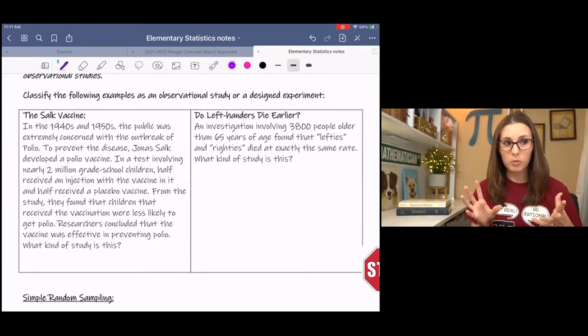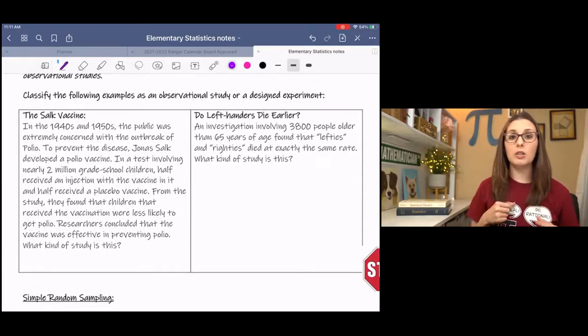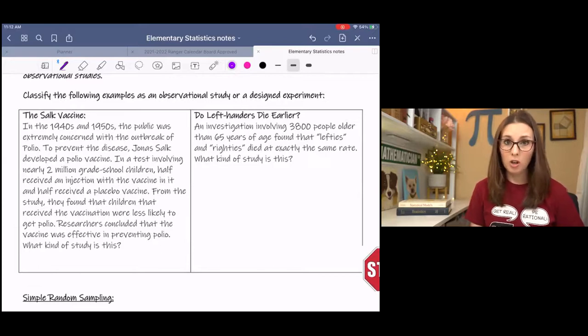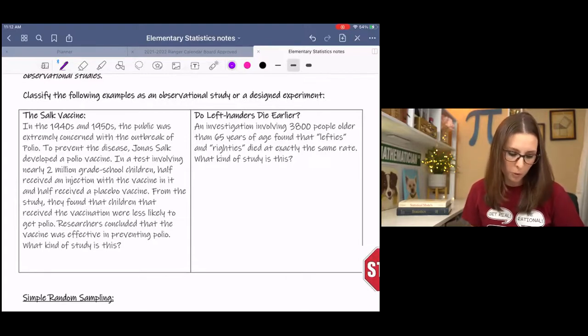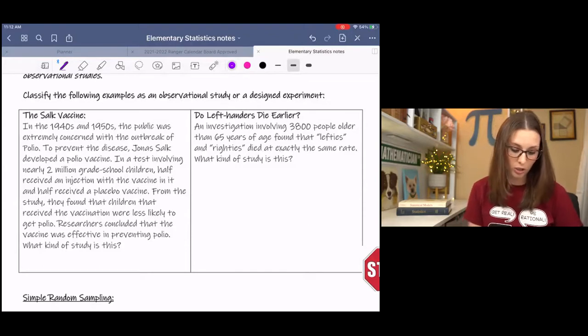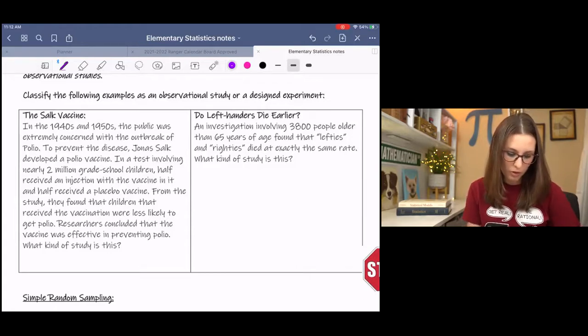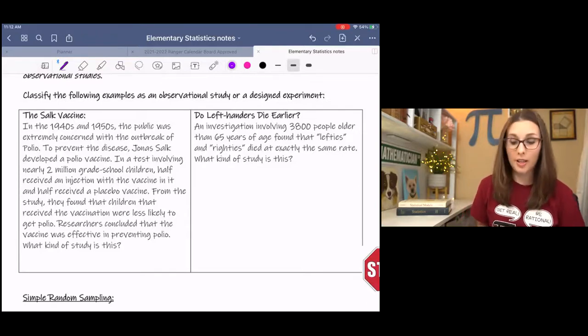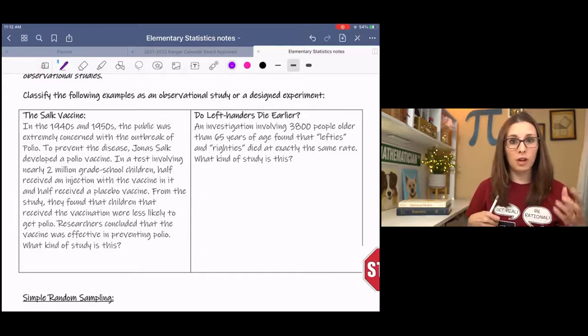Hopefully you paused it. This one should be pretty straightforward. On the left, this is actually a true story. You can look up studies on this. The Salk vaccine. His name was Jonas Salk and he came up with this vaccine. In the 1940s and 1950s, the public was extremely concerned with the outbreak of polio. To prevent the disease, Jonas Salk developed a polio vaccine. In a test involving nearly 2 million grade school children, half received an injection with the vaccine in it and half received a placebo vaccine. So they all got the vaccine, but half got the true vaccine and half didn't. From the study, they found that children that received the vaccination were less likely to contract polio. Researchers concluded that the vaccine was affected in preventing polio. What kind of study is this? This one's pretty straightforward. We have a designed experiment where there's a treatment and a control. The treatment actually got the vaccine and the control didn't.